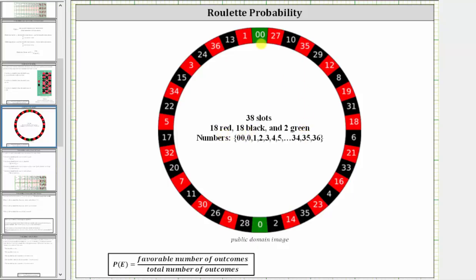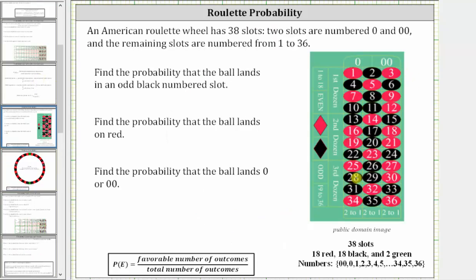The numbers are zero, double zero, and then one through 36. The way the game works is as the wheel spins, a ball bounces around, and then wherever the ball lands determines who wins or who loses. For our problems though, we will use this table here to help us answer the questions. This is actually where people place their bets, but it does show all the possible outcomes.